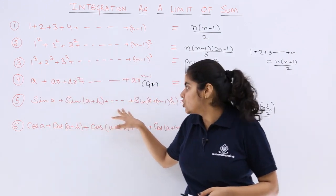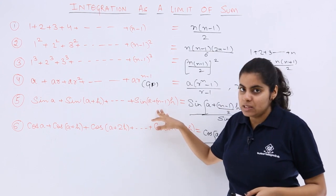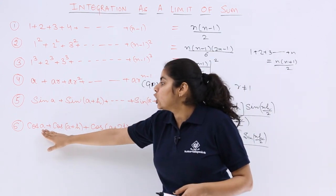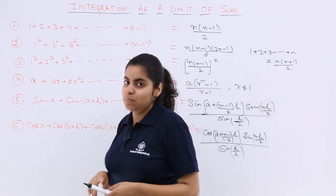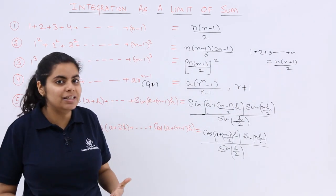Next, sin a plus sin a plus h till sin a plus n minus 1 into h. And similarly, cos a, cos a plus h and similarly cos a plus n minus 1 into h. You can easily learn these formulas.